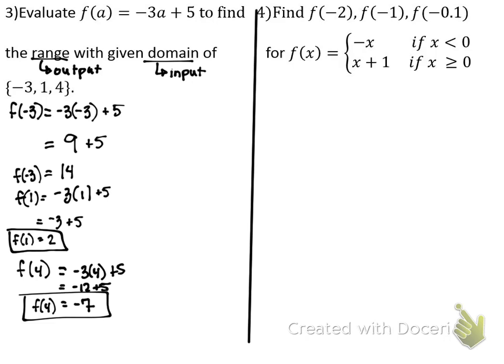Number four is like number two, except we've got three ingredients to evaluate: negative two, negative one, and negative one-tenth. This machine is like that baking machine — it's got two different smaller machines. It gives us some rules: if the ingredient is less than zero, we're going to use this first equation; if the ingredient is greater than zero, we're going to use this other equation. So let's put in negative two, negative one, and negative one-tenth.